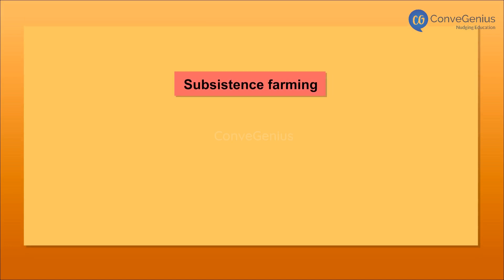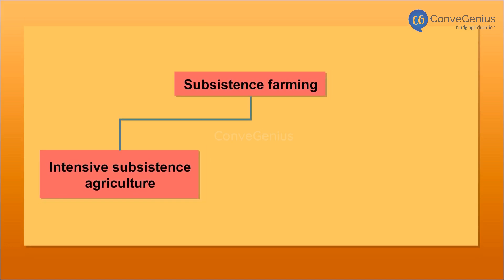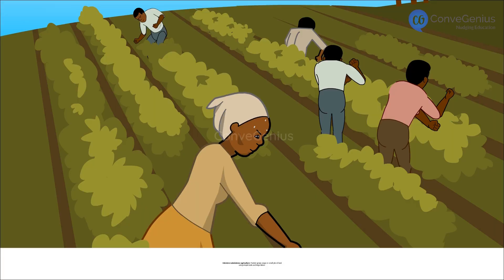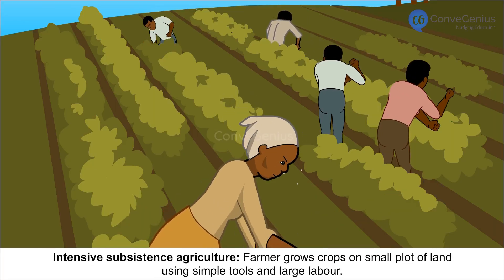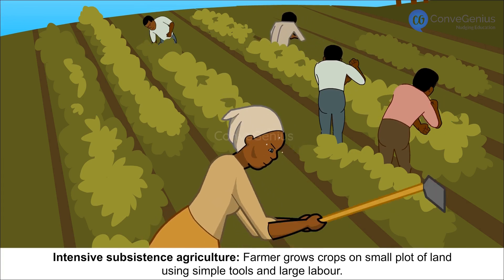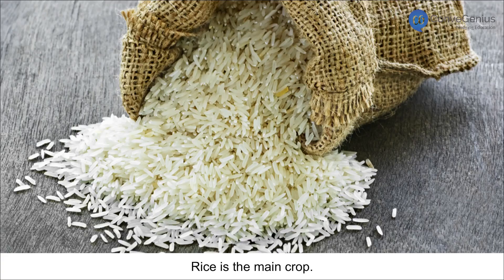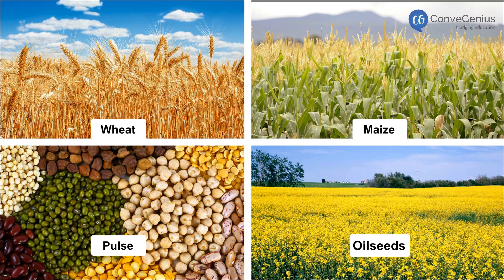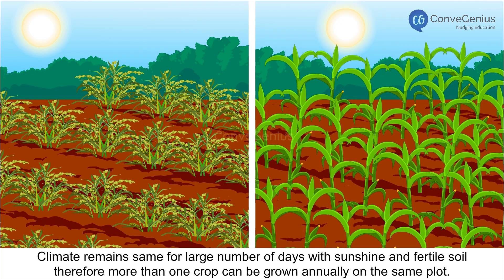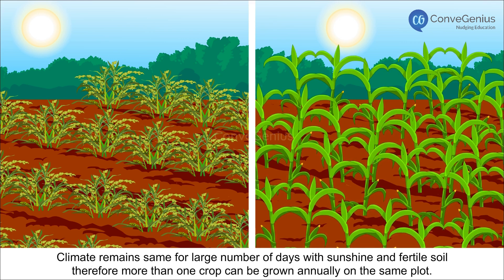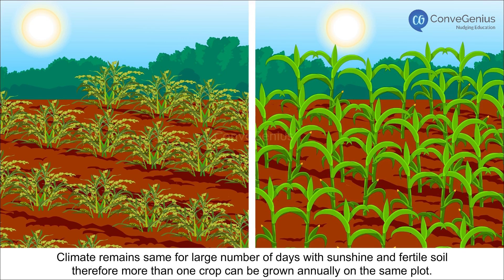Subsistence Farming can be further classified as Intensive Subsistence Agriculture and Primitive Subsistence Agriculture. In Intensive Subsistence Agriculture, the farmer grows crops on a small plot of land using simple tools and large labour. Rice is the main crop. Wheat, maize, pulses and oilseeds are also grown. The climate remains the same for a large number of days with sunshine and fertile soil, so more than one crop can be grown annually on the same plot.